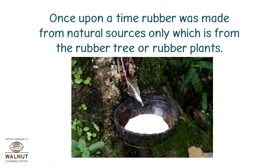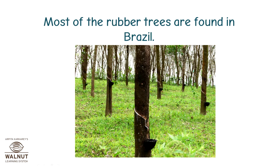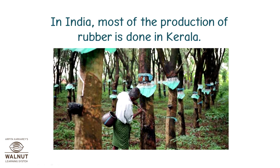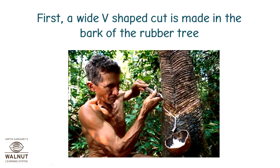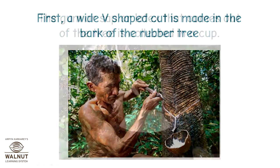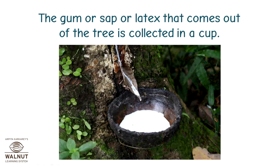Once upon a time, rubber was made from natural sources only — from the rubber tree or rubber plants. Most of the rubber trees are found in Brazil and India. Most of the production of rubber is done in Kerala. First, a wide V-shaped cut is made in the bark of the rubber tree.